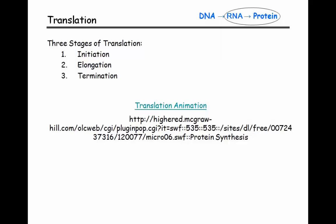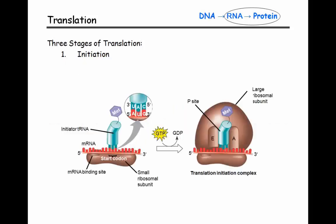That animation link is posted on ANGEL so you can look at it again. That was a run through of the translation process — we'll hit initiation, elongation, and termination quickly. That animation was specifically prokaryotic cells, but there is very little difference between translation in a prokaryote versus a eukaryote. Looking at the initiation process first: in initiation, we're really just bringing together the two subunits of the ribosome. We've sent our mRNA out of the nucleus and into the cytoplasm, and now the small subunit of the ribosome is going to grab hold and bind to that RNA molecule.